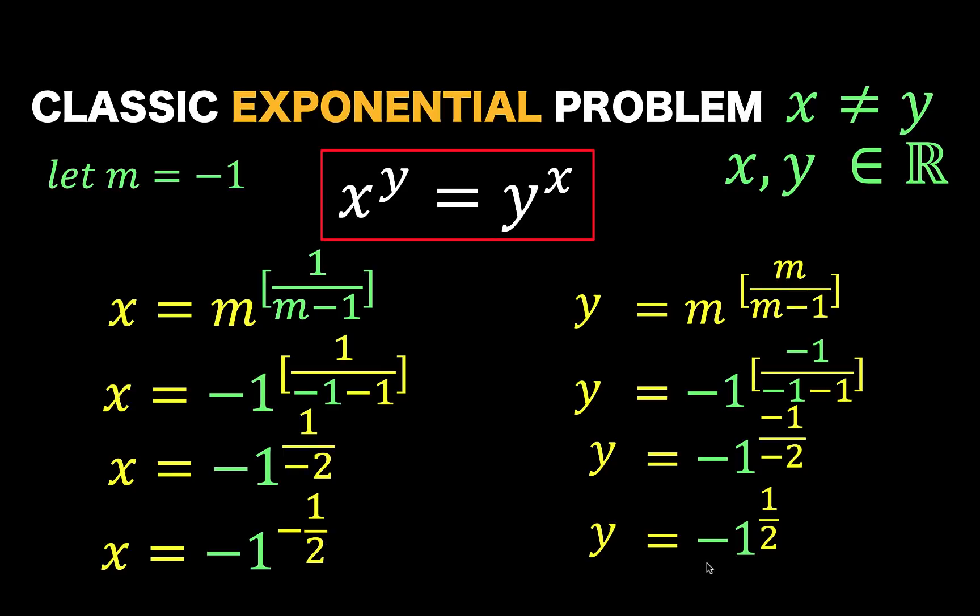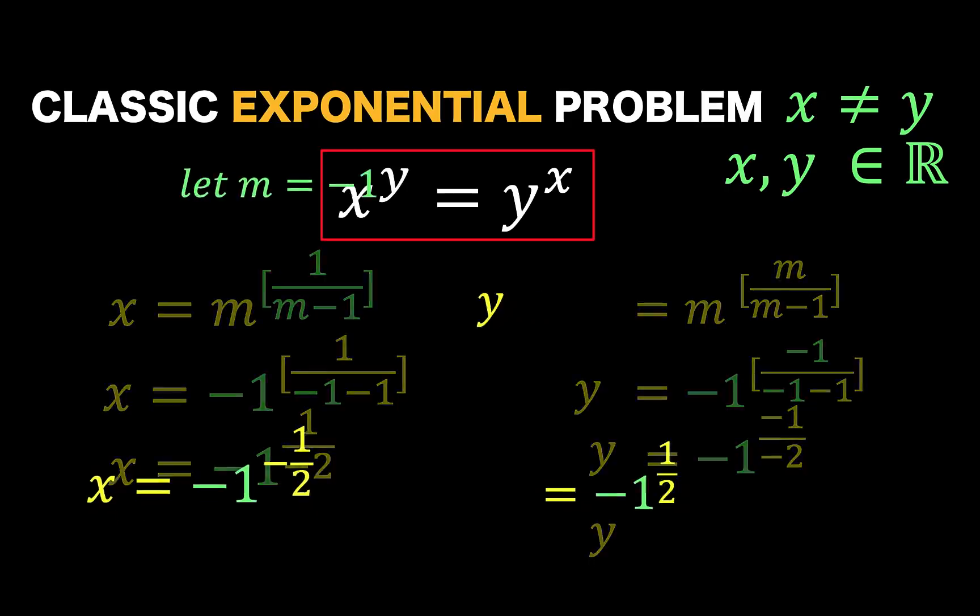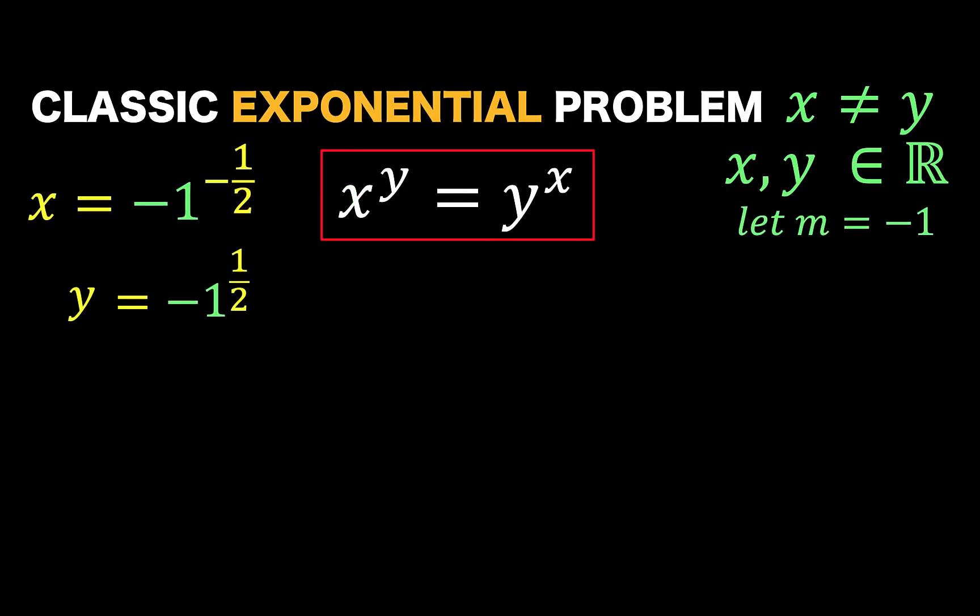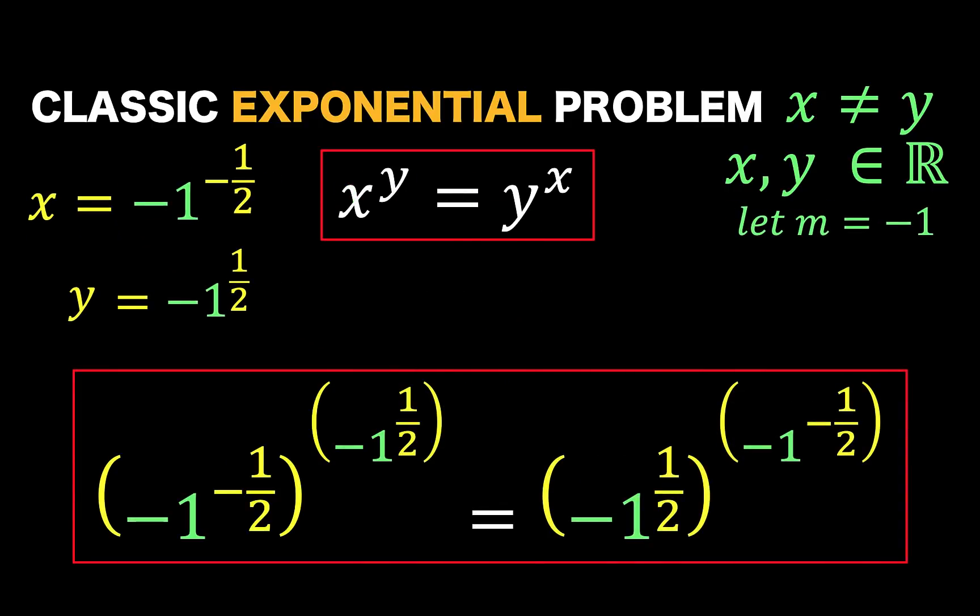That is, at m equals negative 1. And substituting these values to the original equation, we now have this result. So, let's call in again our good friend Wolfram Alpha. And ask if this equation is indeed true.